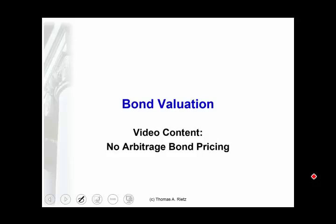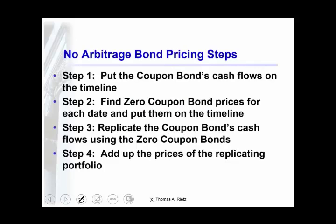This video covers coupon bond pricing using zero coupon bond prices and a no-arbitrage restriction — hence the phrase 'no arbitrage bond pricing.' It's going to involve four steps, but it turns out to be very simple. I'm going to show you on a timeline how to do those four steps and I'll put it in the calculator as well.